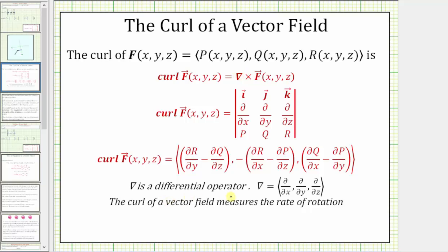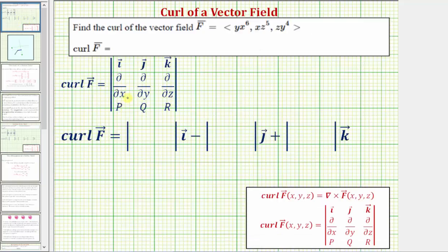Del is the differential operator shown here, so this cross product would give us this three by three determinant. If we evaluate this, we would get this formula here for the curl of the vector field f. So going back to our example, p is going to be equal to x to the sixth y, q is equal to x z to the fifth, and r is equal to y to the fourth z.